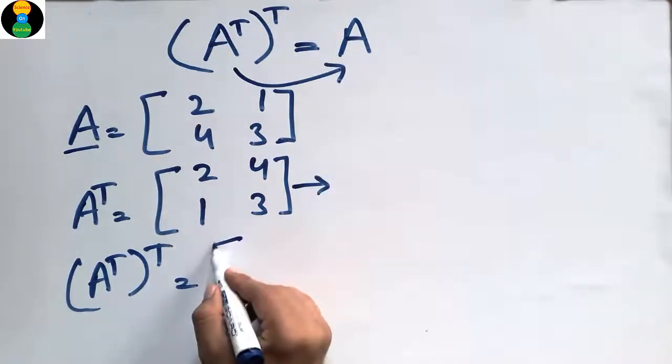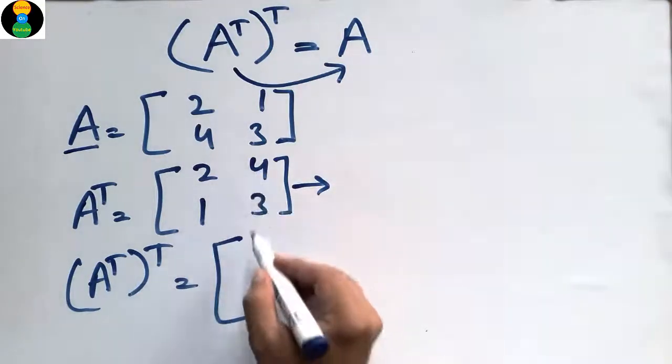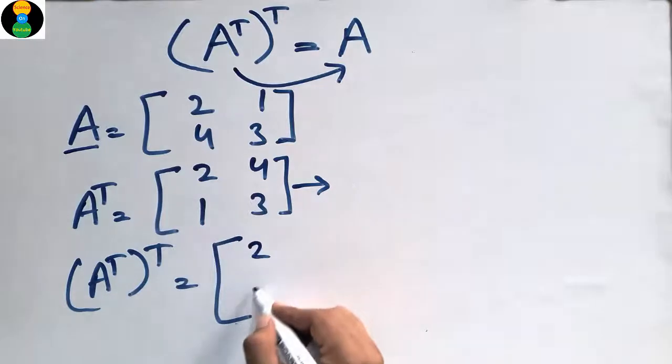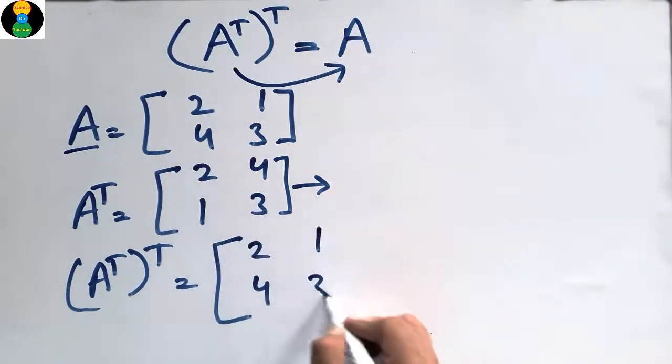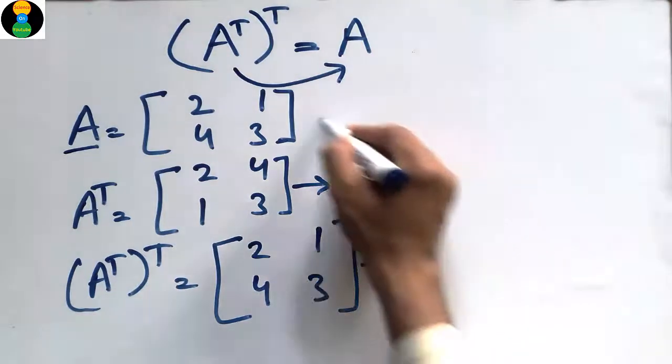Taking the transpose of this one comes out to be [2, 4] - changing this row into the column [2, 4], and [1, 3] changing into the column [1, 3]. This comes out to be the simple A, which is equal to A.